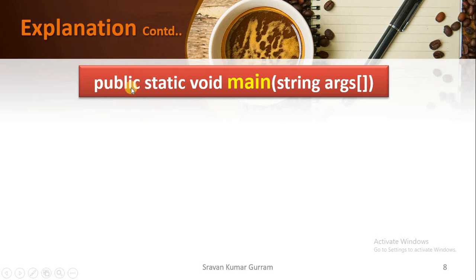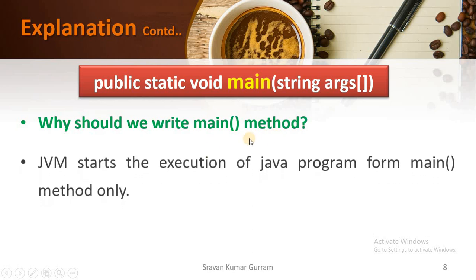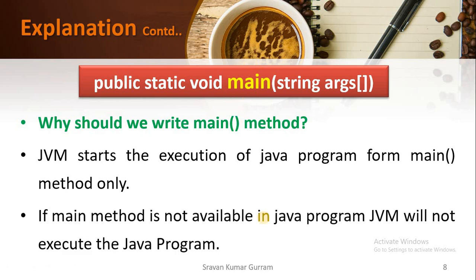We write public static void main(String[] args) in our Java program. Why? When you execute your program, JVM — Java Virtual Machine — is responsible for execution and it starts with the main method only. Without a main method, JVM cannot start execution. You must write exactly one main method; writing multiple main methods will confuse the JVM about where to start.